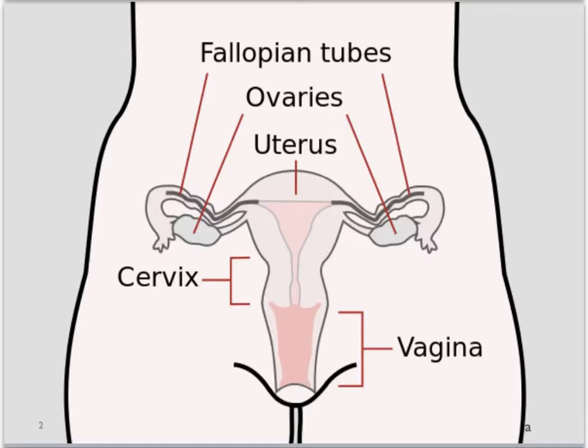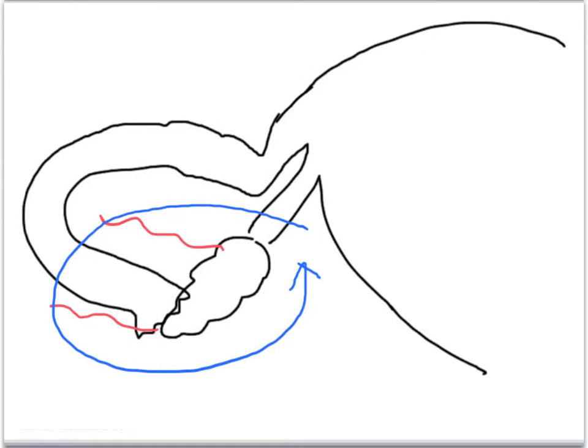Ovarian torsion occurs when the ovary and often the fallopian tubes together become twisted or torted around their vascular supply. From the torsion a few things happen from the vascular supply.